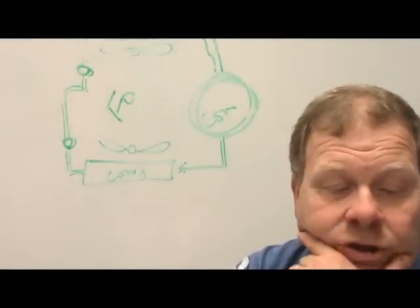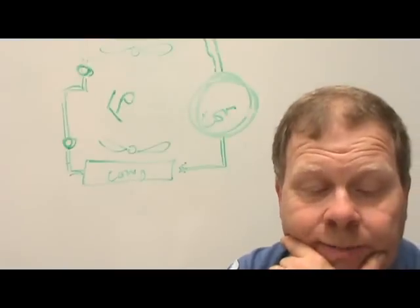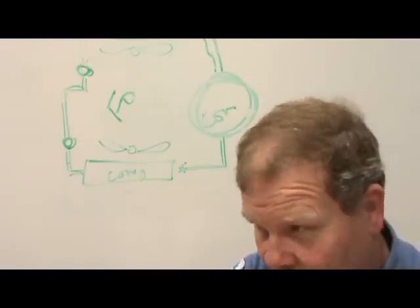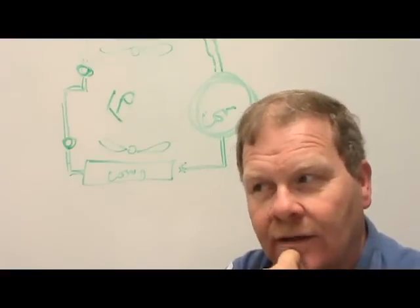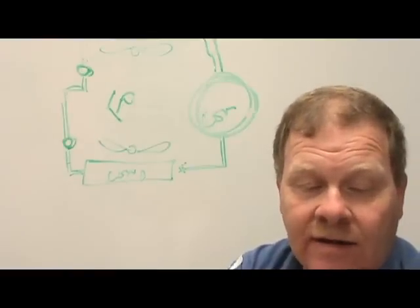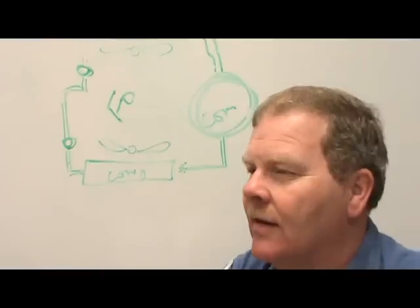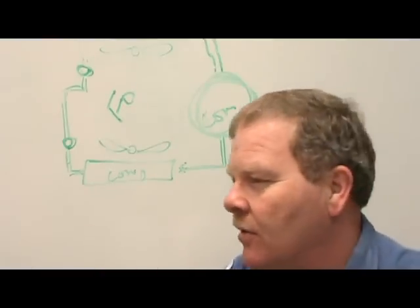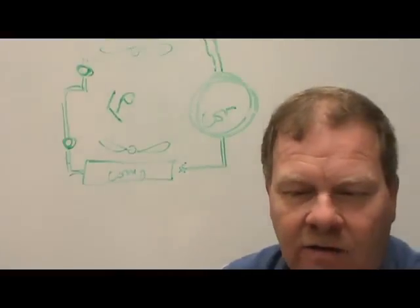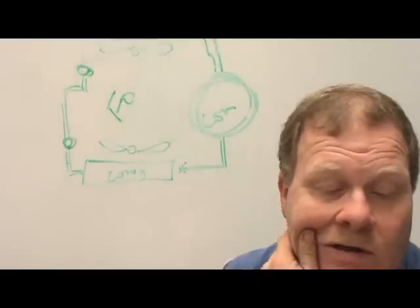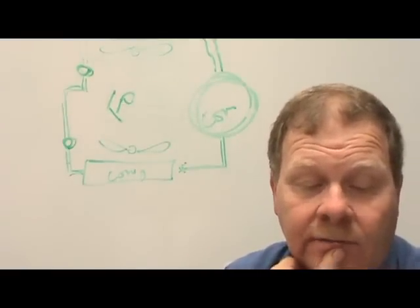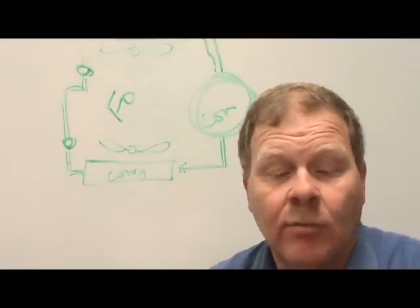Refrigerant entering the condenser should be what? High-pressure vapor — it's got to go in as a vapor so it can turn into a liquid, because it needs to condense. What are the states of refrigerant in the accumulator? Both vapor and liquid.